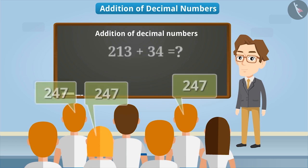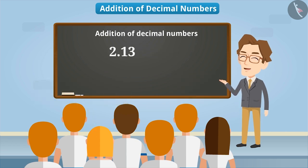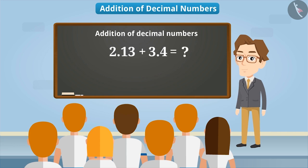The teacher then asked them, what would be the sum of 2.13 and 3.4? The students started thinking hard as to how they could add these two decimal numbers. Do you also face such problems? If yes, then let's solve it in this video.